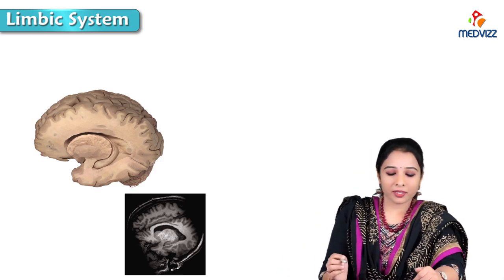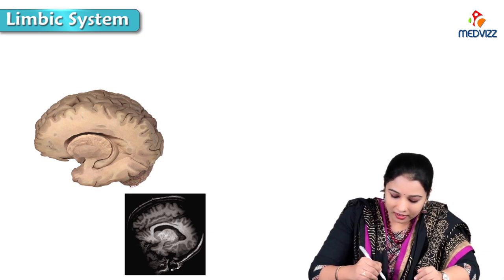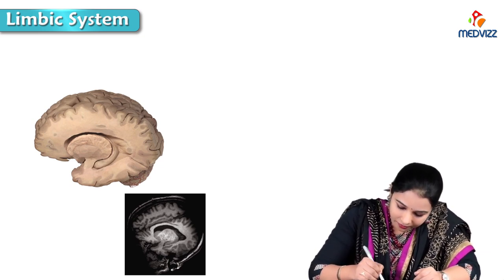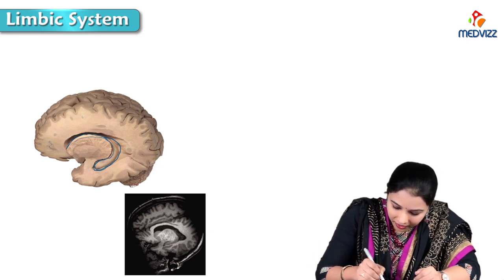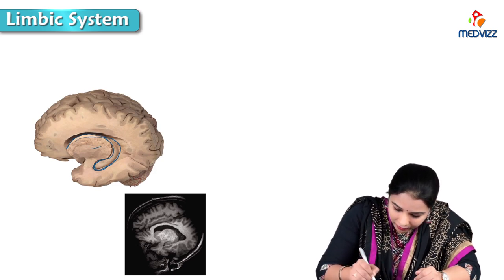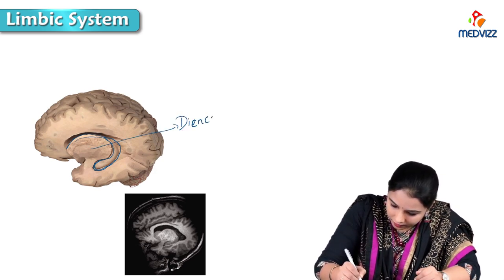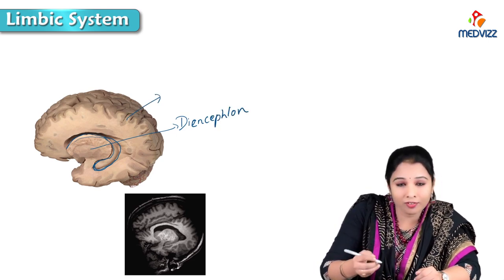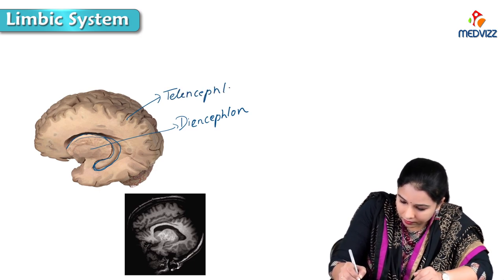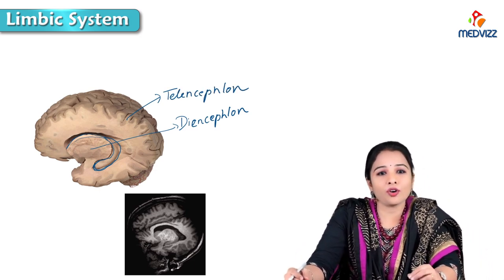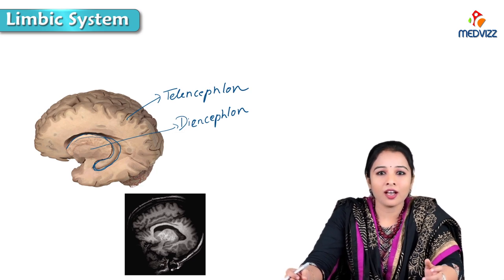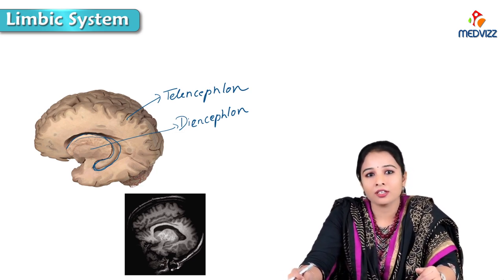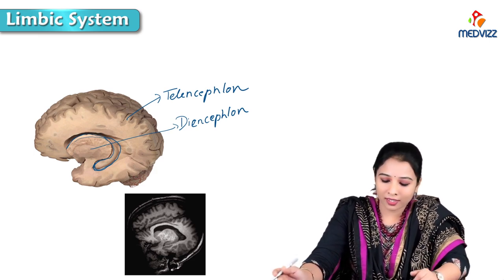Here is a picture showing a dissected specimen of the limbic system. It is dissected deeply, deep to the lateral ventricle, where we can see the diencephalon and here is the telencephalon which forms the cerebral cortex. The exact function of the limbic system is still unknown, but we say that these strange emotions affect our visceral organs. So the limbic system is otherwise called the visceral brain.